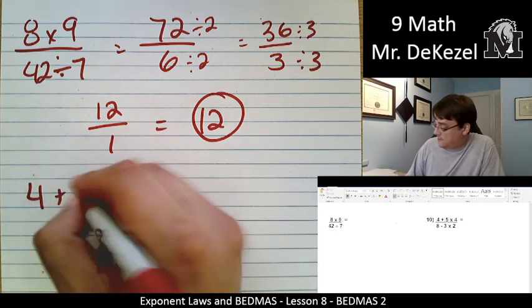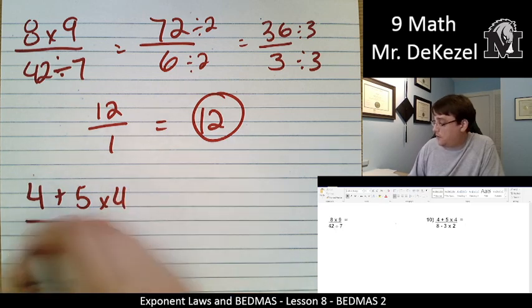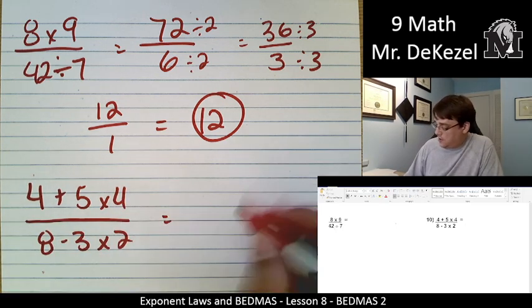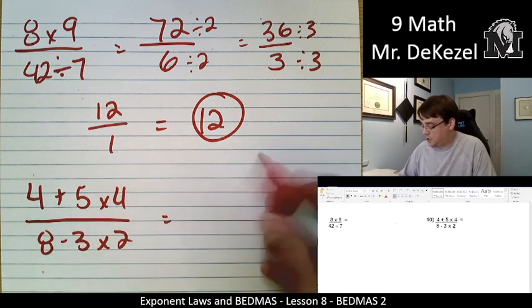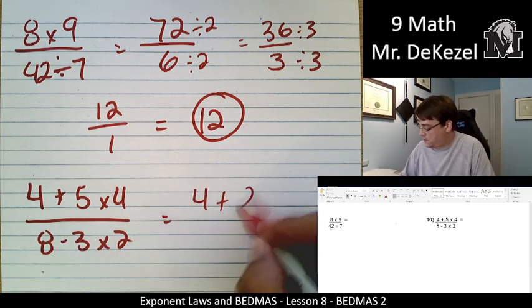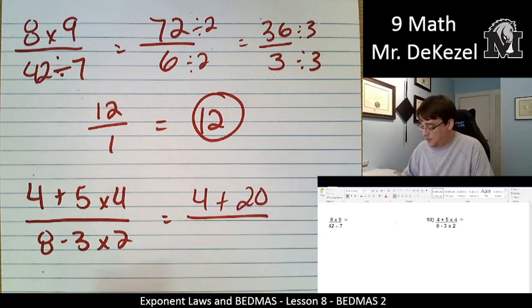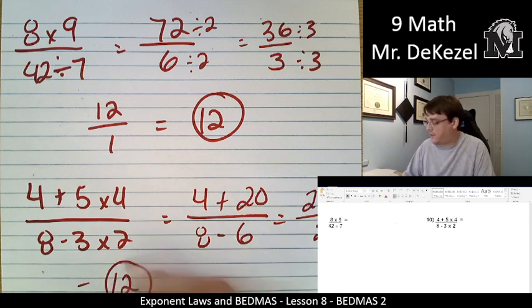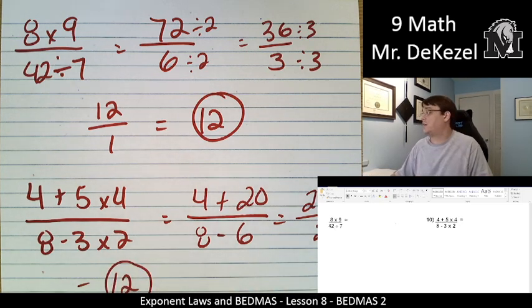Okay. Let's do the next one. 4 plus (5 times 4) over 8 minus (3 times 2). All right. So multiplication first. So that's 4 plus (5 times 4 is 20). And then multiplication first on the bottom. 8 minus (3 times 2 is 6). That is 24 over 2, which again is 12. I think that that's weird. All right. Answer is again 12.